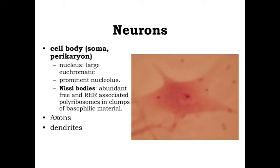If we take a look at the classic description of a neuron, you're going to have a fairly distinct, fairly large cell body. Remember from lecture, we talked about the cell body also being called the soma or the perikaryon — perikaryon meaning 'around the nucleus.'